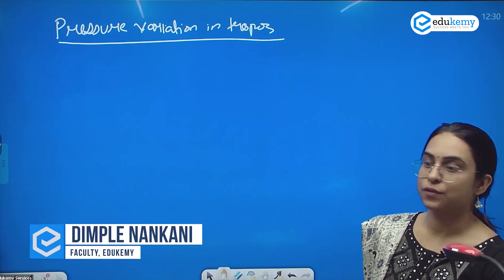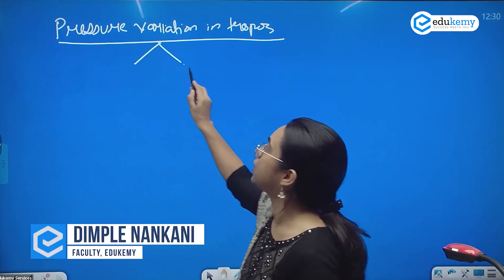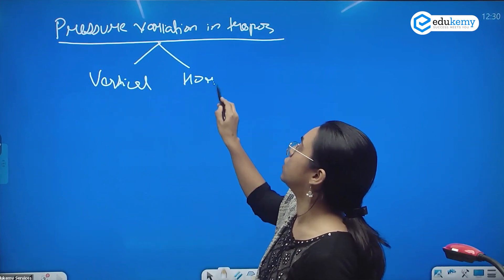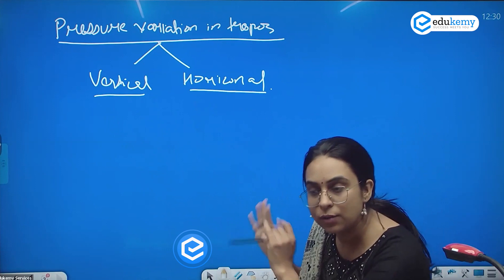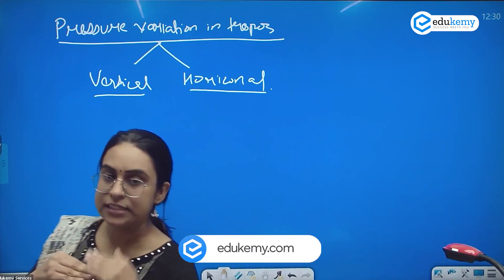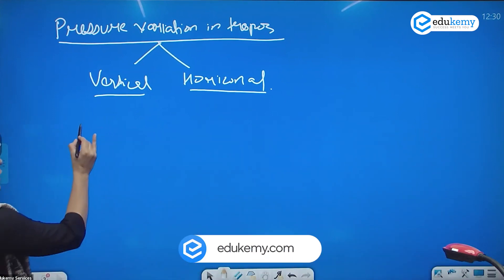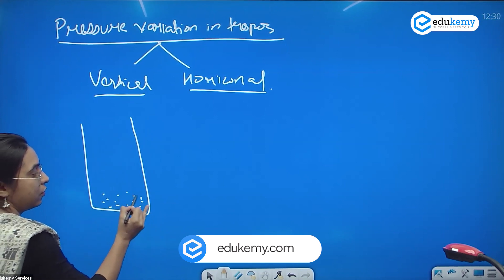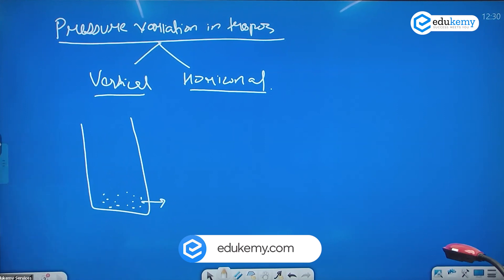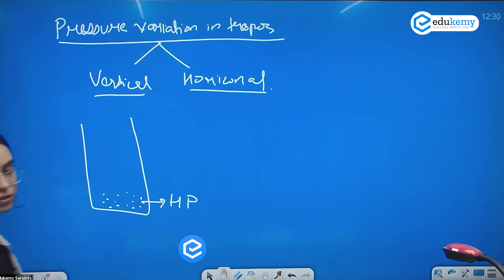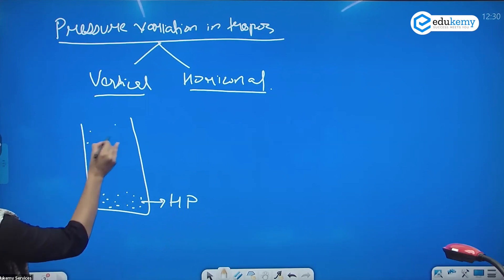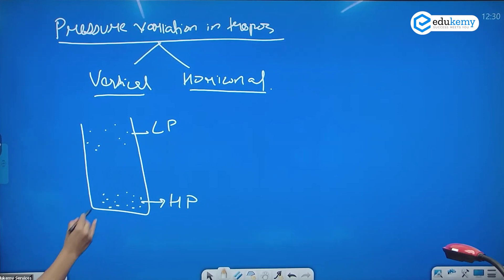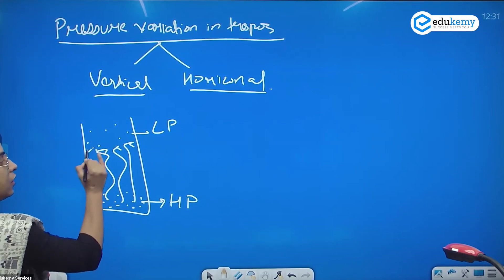Pressure variation in the troposphere has two types: one is vertical and the other is horizontal. Vertical pressure variation is related to density layering. At the surface, we have high atmospheric pressure, and compared to that, we have low pressure aloft. Therefore, we have vertical air currents.